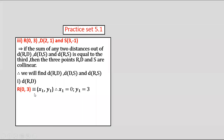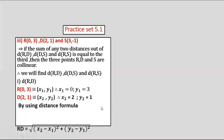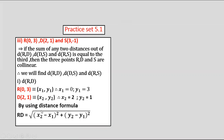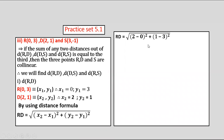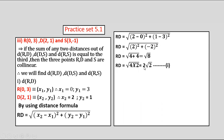First, to find distance RD: coordinate of R(0, 3) as x1, y1, so x1 = 0, y1 = 3. Coordinate of D(2, 1) as x2, y2, so x2 = 2, y2 = 1. By distance formula, RD = √[(2−0)² + (1−3)²] = √[4 + 4] = √8 = 2√2, equation number 1.